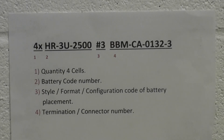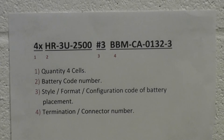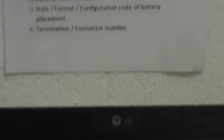The first red number is the quantity of the cells. The second red number is the battery code number. The third is the style or layout of the battery placement. And the fourth is the termination or connector number.